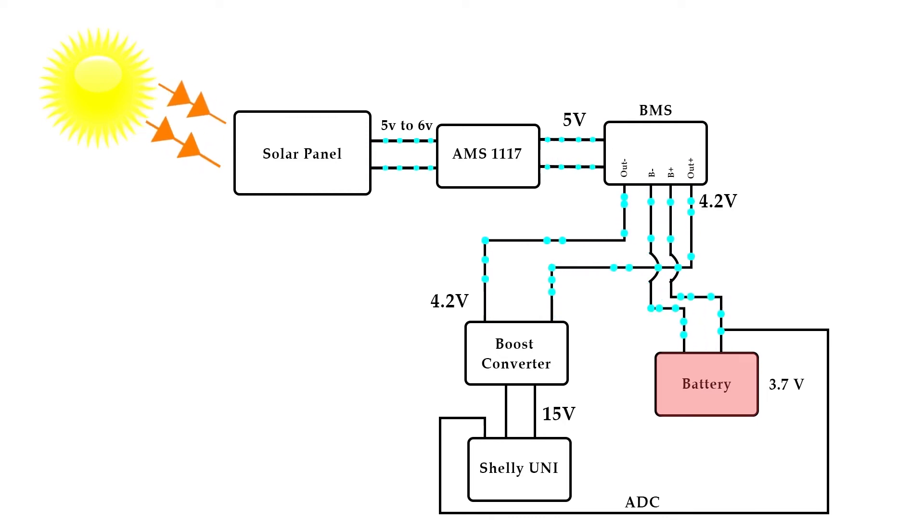The 3.7V battery power is transferred to the MT3608 Boost Converter, which converts it to 12-16V to run the Shelly Uni. The Uni's ADC is connected to the positive side of the battery to provide real-time voltage status.